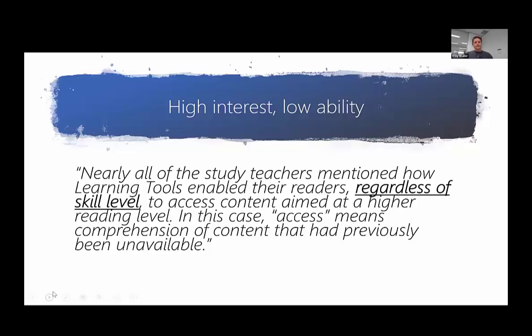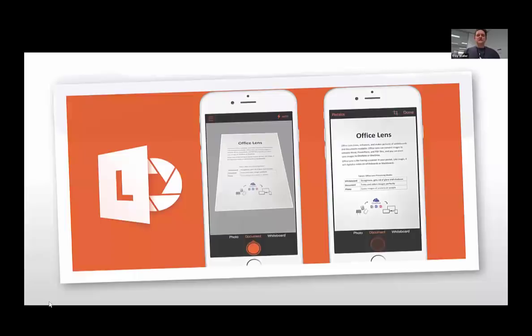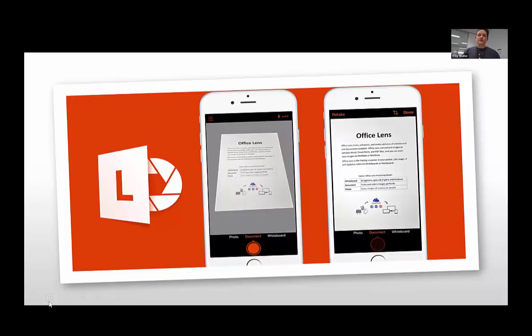Office Lens, as I said, is an app for your PC — you can go to the Windows Store and download it. It's also available in the App Store for Apple devices and the Play Store for Google devices. Because it syncs to your Office 365 account, you're able to drop photos into different tools. So you can take a photograph of text, drop it into OneNote or Word, and get that whole Immersive Reader experience.